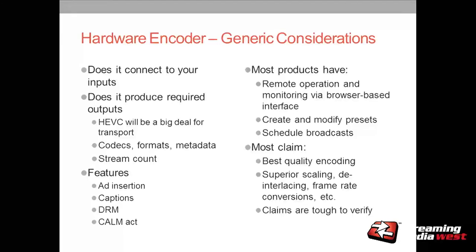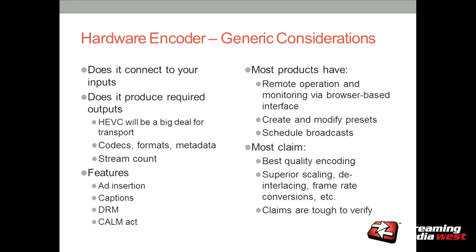What codecs does the live encoder support and what do you need it to support? How many streams can it output? If you need one stream, you just need a pretty simple encoder; if you need nine streams, you're going to need to spend a lot of money for a big hardware encoder. What features do you need in terms of advertising assertion, captions, DRM? In differentiating the products, you'll hear a lot about best quality encoding — they're all going to say they're the best — but qualitatively they're all pretty similar.